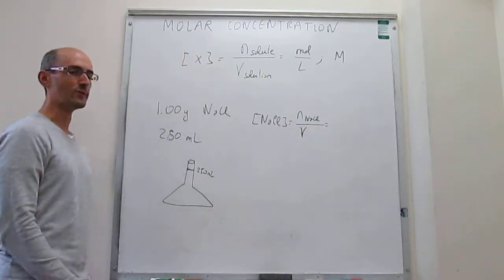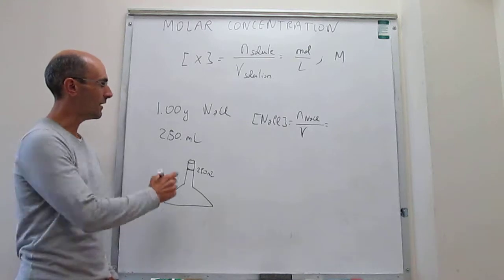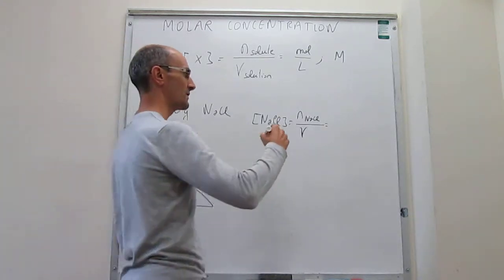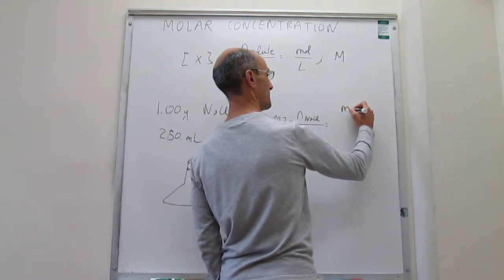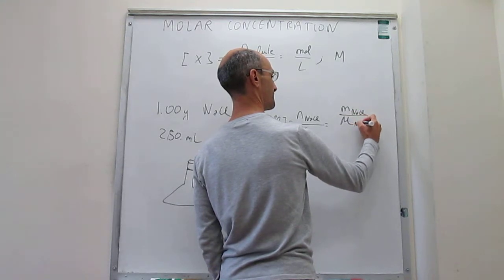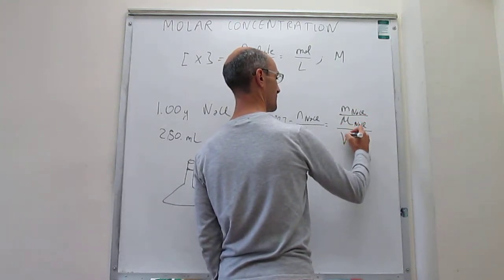Now, we don't have directly the number of moles, but we can get the number of moles from the mass of sodium chloride and the molar mass. So that is going to be mass of sodium chloride over the molar mass divided by the volume of the solution.